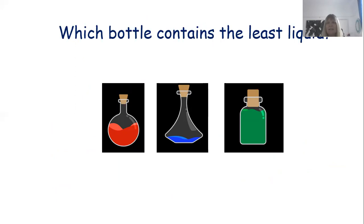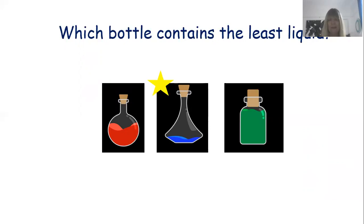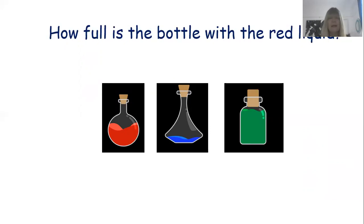Which bottle contains the least liquid? We're talking about capacity. We've got a bottle containing red liquid, a bottle containing blue, and a bottle containing green. Which one has the least liquid in it? The middle one — the middle one with the blue liquid has got the least. Which one's got the most? The bottle with the green liquid. And the bottle on the left with the red liquid — is it completely full, completely empty, or half full? It's half full.